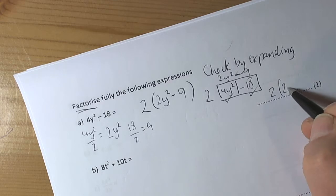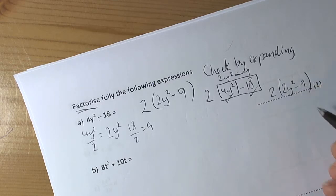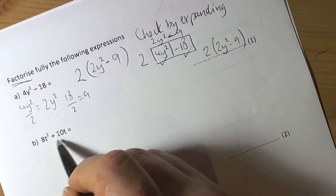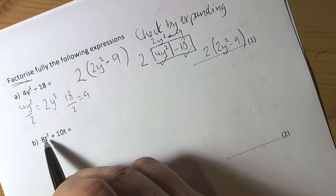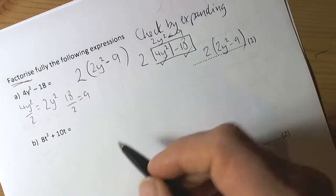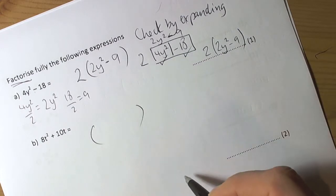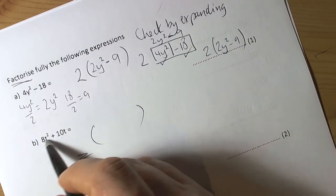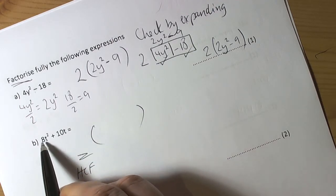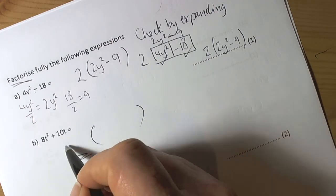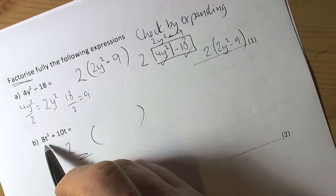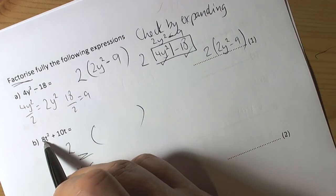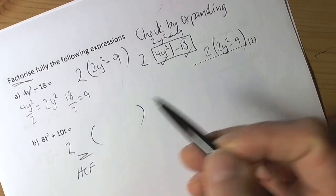Now we factorize the next expression. Again we're looking for common factors — because both terms share a common factor it's going to be a single bracket factorization. Outside the bracket goes the highest common factor of the two terms. Looking at the number parts first: we've got 8 and 10, and the highest common factor of 8 and 10 is 2, since 4 goes into 8 but not into 10.